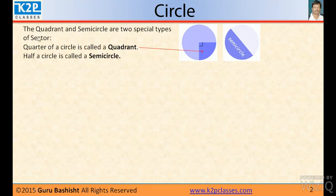The quadrant and semicircles are two special types of sectors. Quarter of a circle is called quadrant. Half of a circle is called semicircle.